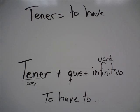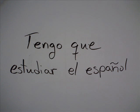One of the major uses is to talk about things you have to do. You conjugate tener, add que, put in an infinitive verb, and you say I have to. An example is: tengo que estudiar el español — I have to study Spanish. This works with any verb: tener que.